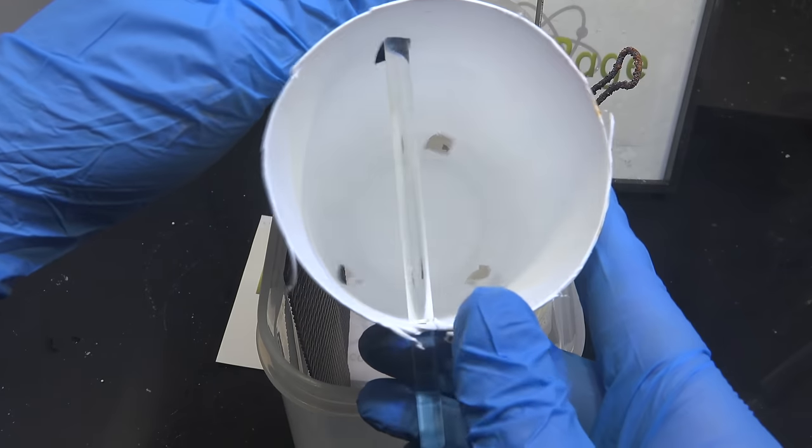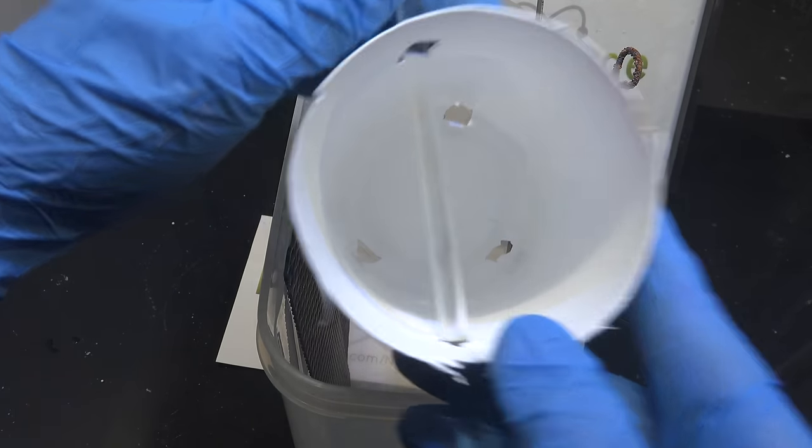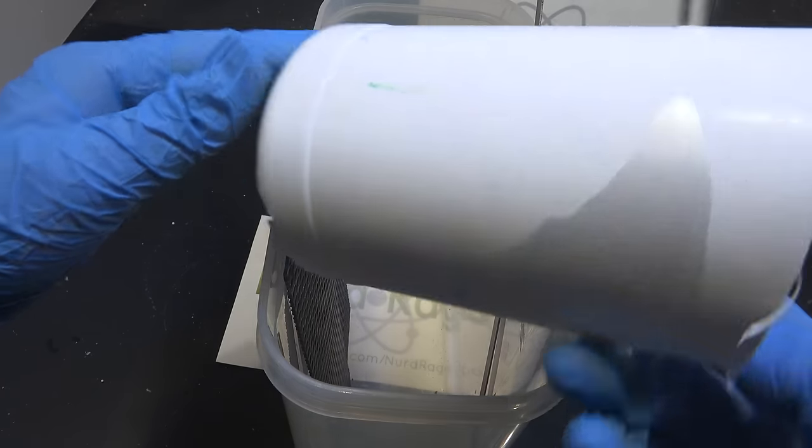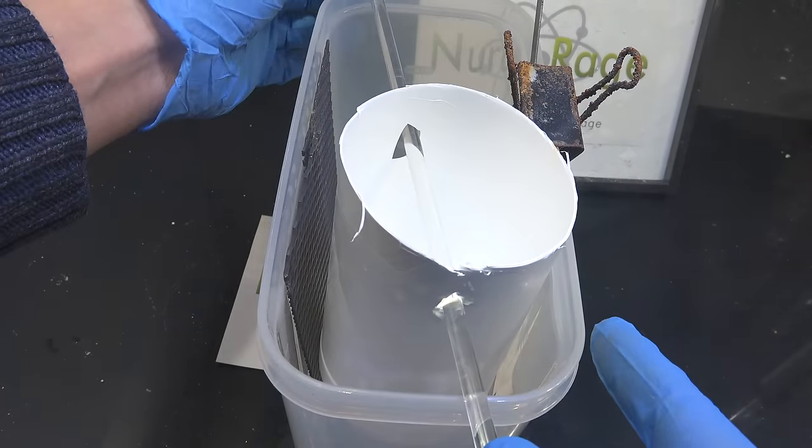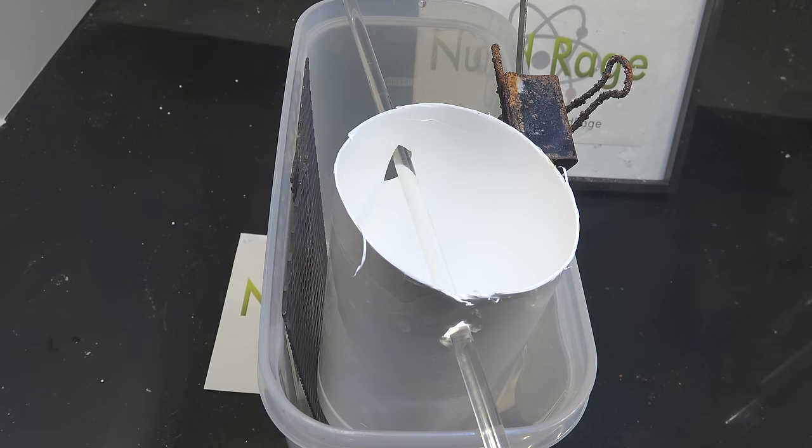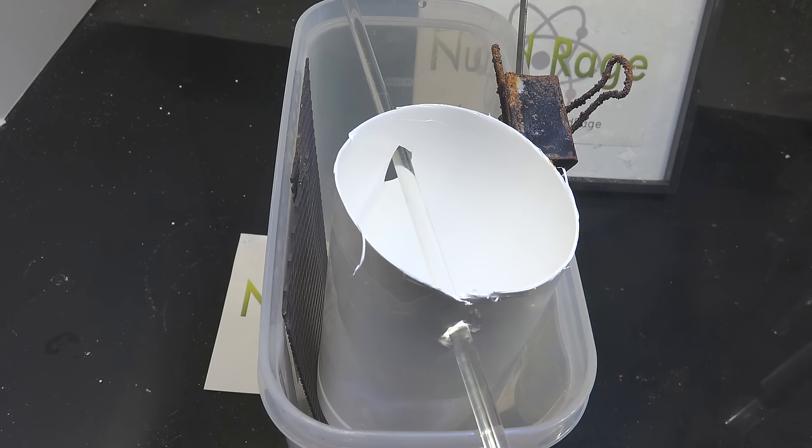Now something optional you can add is a salt cup. It's nothing more than a plastic cup with a few holes poked in the bottom. The glass rod I've skewered through it lets me suspend the cup near the top of the cell but the bottom will be below the water line. The idea of the cup is that you can add salt to it and have it slowly dissolve the electrolyte.